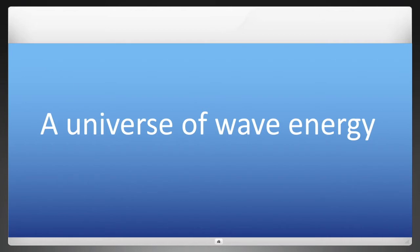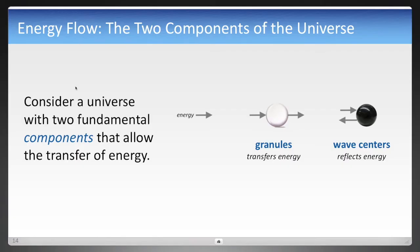So now let's apply that analogy to the universe. First, we need to add one more thing before we start talking about waves, which is how can the waves move in the first place? Now, consider a universe with two fundamental components that allow the transfer of energy. And one is called granules that transfers energy forwards. And one is called the wave center, which reflects it backwards. And by the way, both of these names are given to two pioneers of the theory, Dr. Milo Wolf and Gabriel Lafreniere.